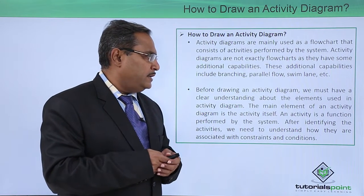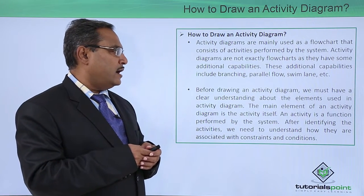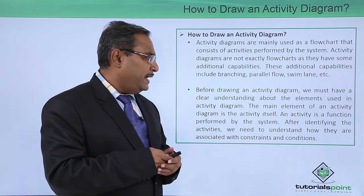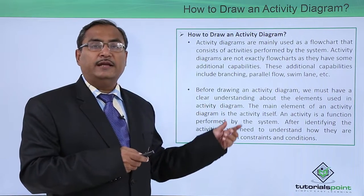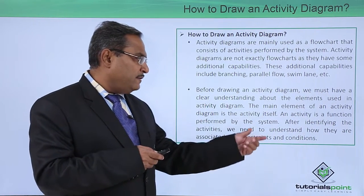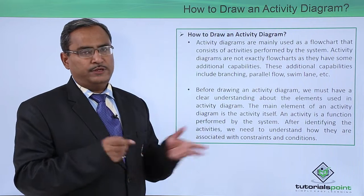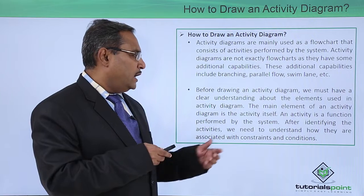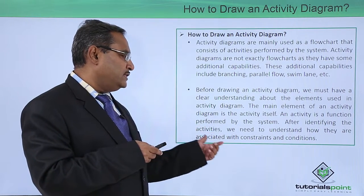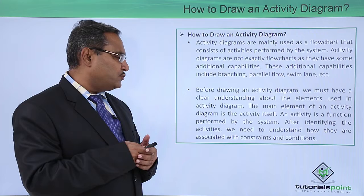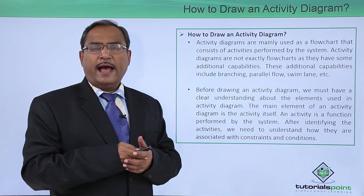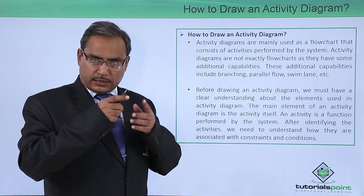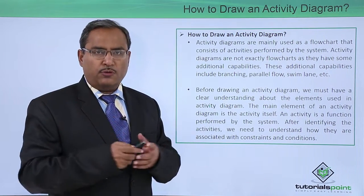Before drawing an activity diagram, we must have a clear understanding about the elements used in it. The main element of an activity diagram is the activity itself — a function performed by the system. After identifying the activities, we need to understand how they are associated with constraints and different conditions, and depending upon them, the control flow will be decided.